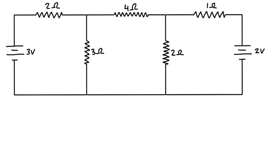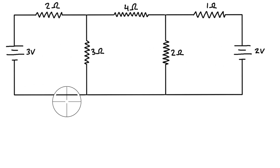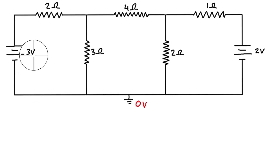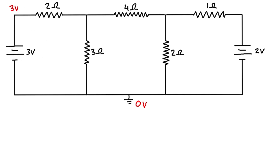To get started, first we have to identify a ground. In the case where there are voltage sources, especially if two voltage sources are connected to the same node, you're probably going to want to ground that node because it'll reduce the number of unknowns. So let's pick this one, draw on a ground — this is going to be our zero volts reference point. Because we have a voltage source attached to it, this node here is going to be three volts higher than zero ground.